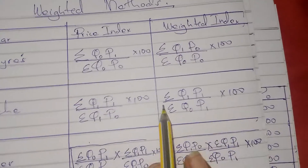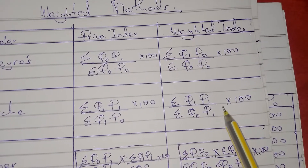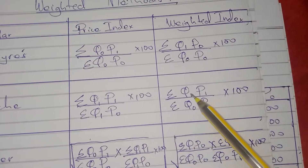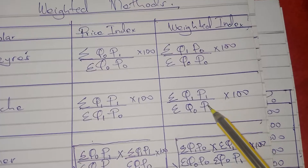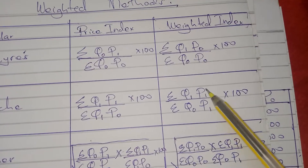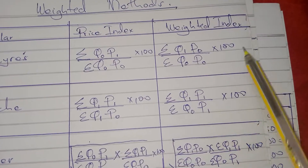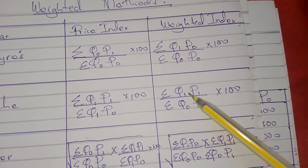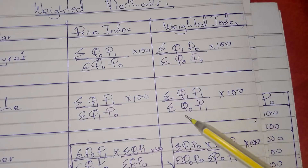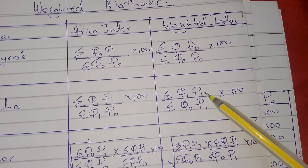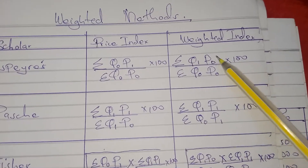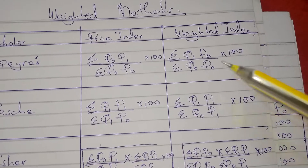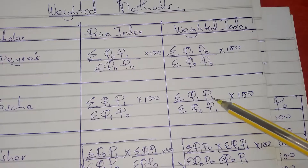For Paasche's weighted index, since it is about quantity, quantity changes from q-naught to q1, but prices are constant at p1, p1 — it does not change because we are dealing with the weighted index, not the price index. For price index, quantity is constant and prices are changing; for weighted index, quantity is changing but prices are constant. The difference between Spayless and Paasche is that Spayless uses p-naught, p-naught while Paasche uses p1, p1.